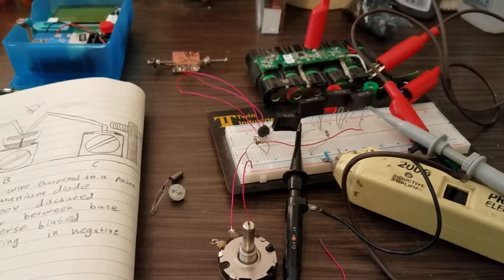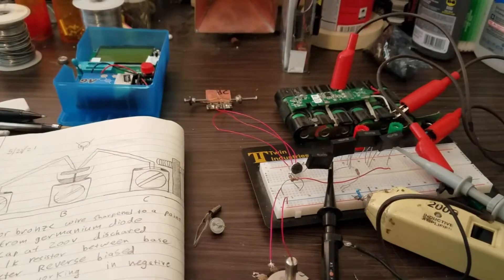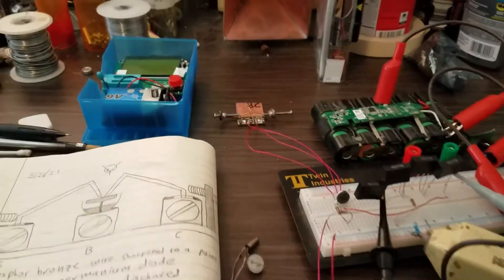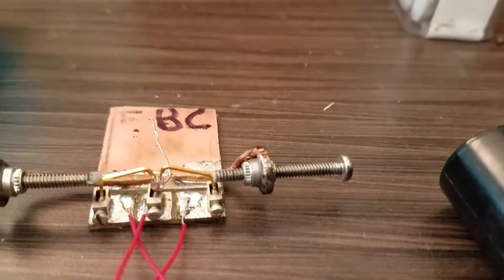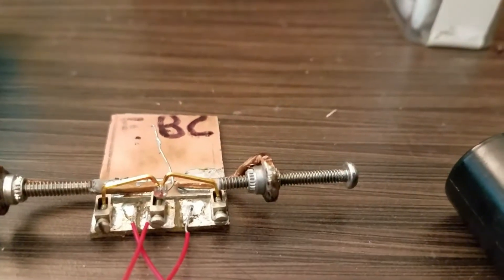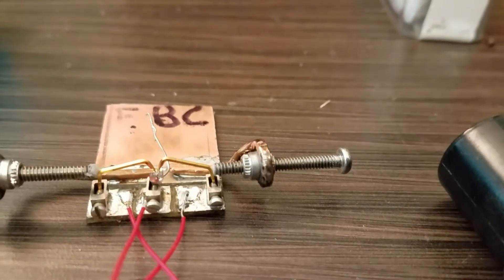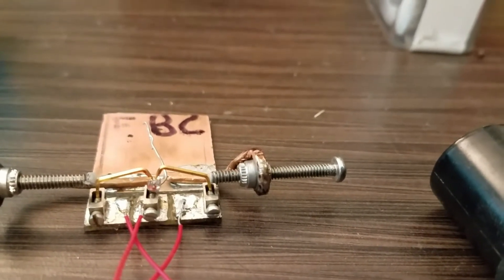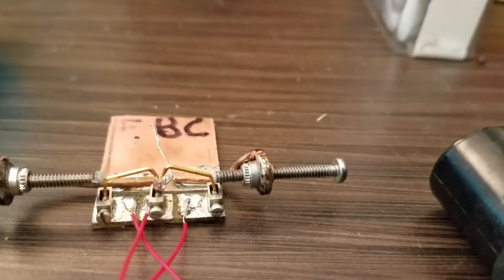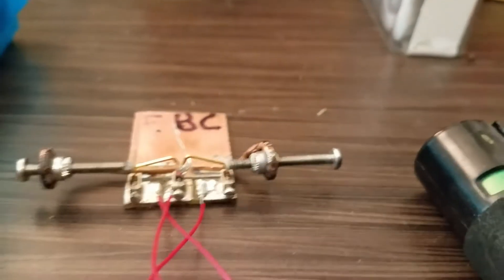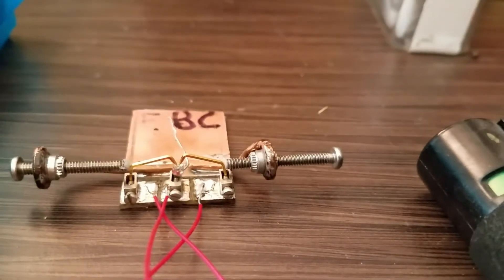Okay, so in this video I'm going to talk about my current progress in trying to make a point contact transistor. So there's the one I'm currently working on right now. It has a little slug of germanium from a germanium diode and then two phosphor bronze pins poking on the top of it with some screws to adjust to move them back and forth.